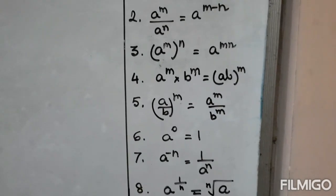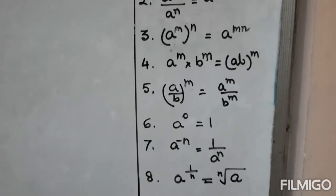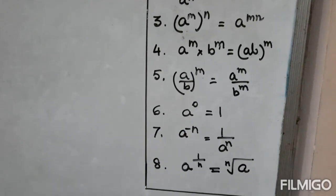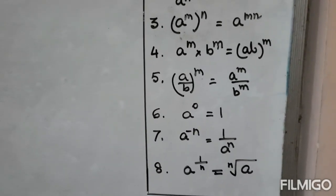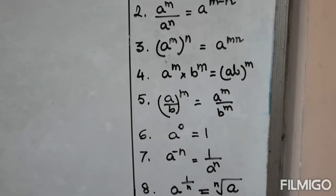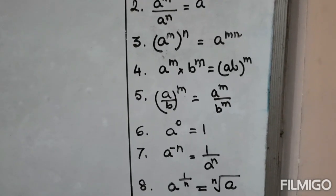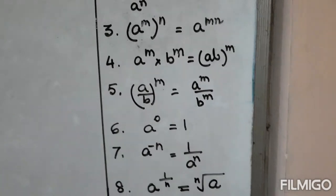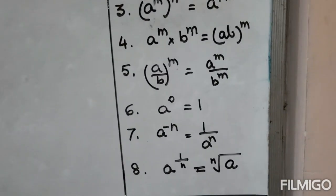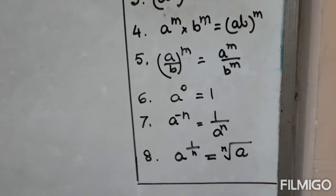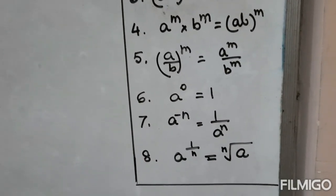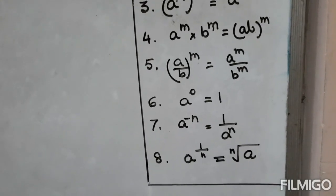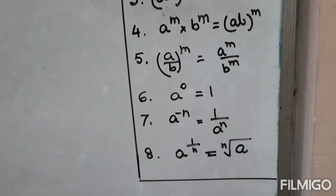If we have a to the power m to the power n, then we can multiply the powers. Number 4: a to the power m into b to the power m — when the power is same for both, we can multiply the bases and write as a single power. A by b to the power m can also be written as a to the power m divided by b to the power m. Anything to the power 0, that is a to the power 0, equals 1. A to the power minus n equals 1 by a to the power n — this is how a negative power can be converted into positive. A to the power 1 by n equals the nth root of a, so the nth root of a can be written as a to the power 1 by n.